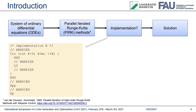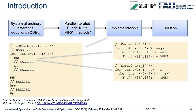Kernel RHS, for instance, has a 4D loop structure, which naturally leads to different kernel variants by interchanging the loops. This gives us, for example, kernels RHS-JI and RHS-IJ, where the I loop runs over the number of stages of the ODE method and the J loop runs over the three dimensions of the ODE system grid. This already doubles our implementation count. Still, more implementations can be derived through additional tuning and optimizations.